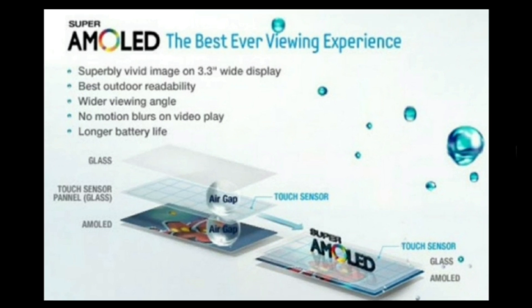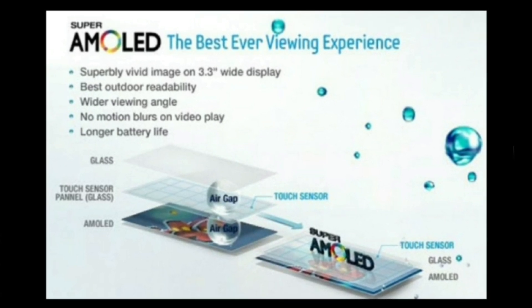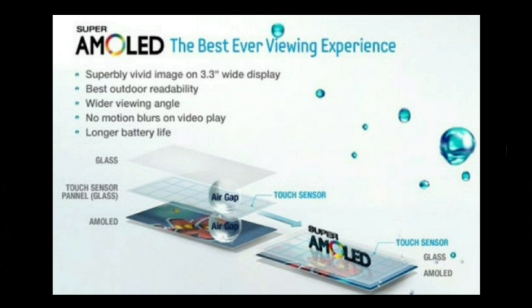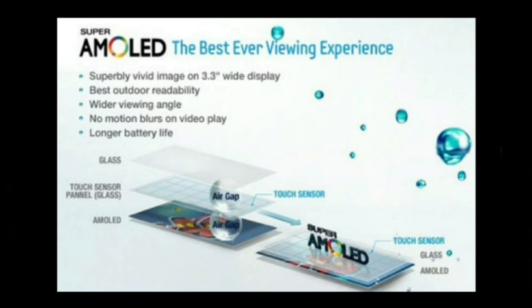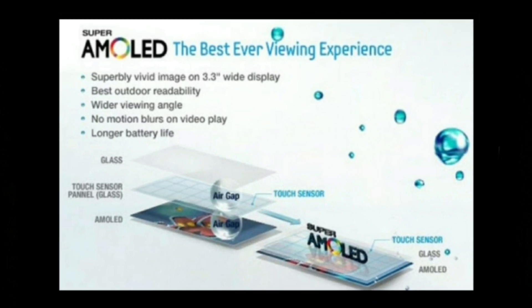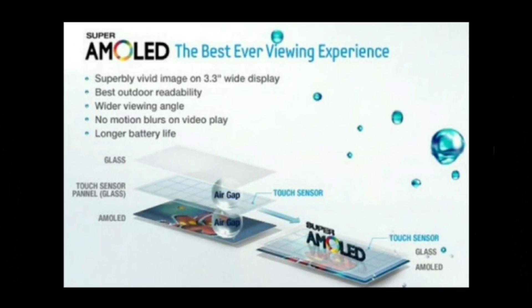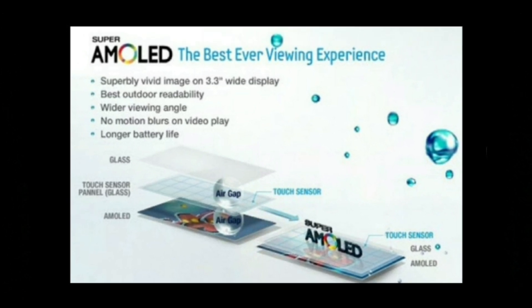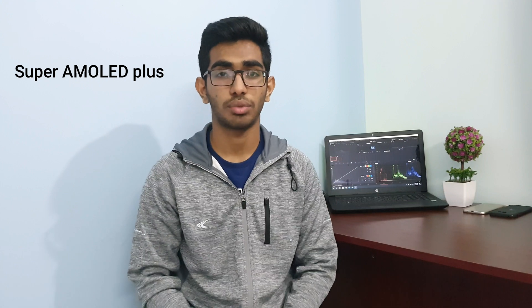The first type of AMOLED I want to talk about is Super AMOLED. Super AMOLED is a more advanced version of regular AMOLED — it integrates the touch sensors and the actual screen into one layer. This makes Super AMOLED displays really thin and removes air gaps between layers, which helps reduce sunlight reflection and improves brightness.